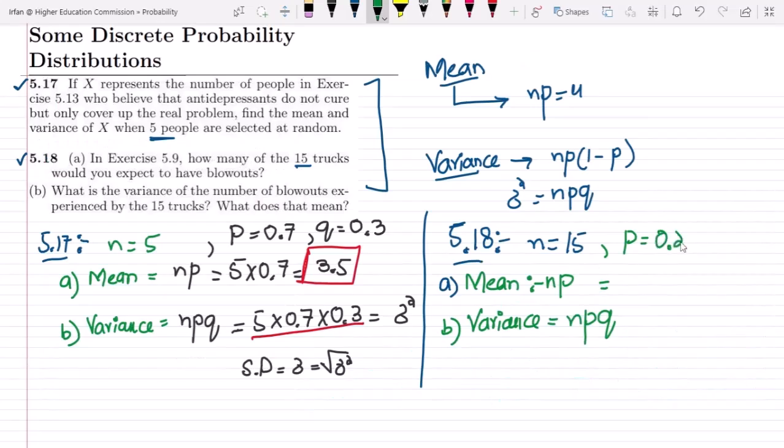So p was 0.25 and let me put these values here. So it would be np, so n is 15 multiplied by 0.25 and the answer will be here. Similarly for the variance which is sigma square, n is 15, p is 0.25, and q which we have found out is 0.75, so multiplying 15 times 0.25 times 0.75.